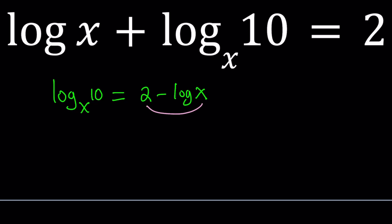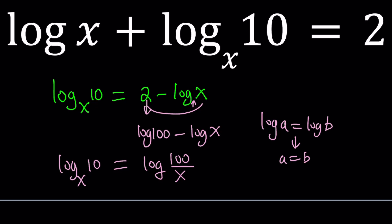Since we have base 10 on the right-hand side, we can write this as log 100, which is 10 to the second power, minus log x, and then write it as log 100 divided by x. I want that to equal log 10 with base x. Now, if you have log a equals log b, then this just means a is equal to b, regardless of what the base is. But this is only true if the bases are equal.